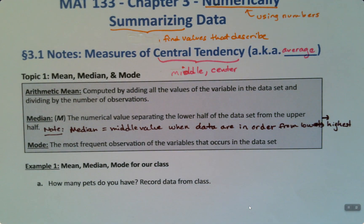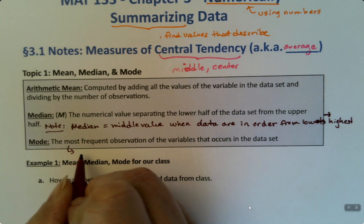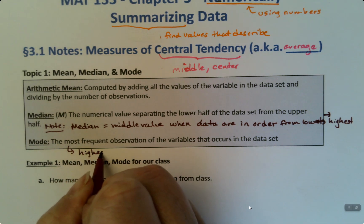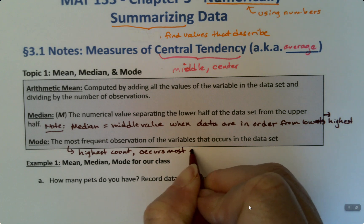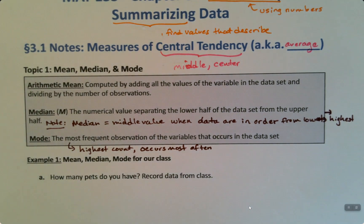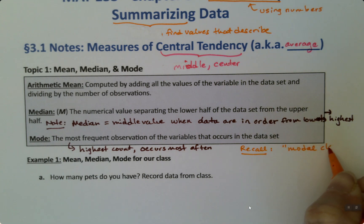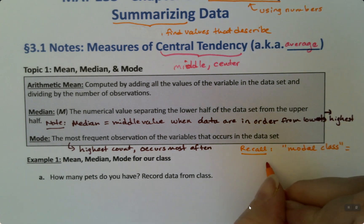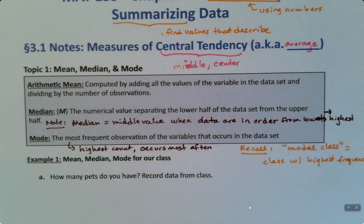And then the mode, the mode is the value that has the highest frequency. In other words, it's the one that occurs the most often. So it'll have the highest count. You've actually already run into this before because we talked about, in chapter 2, the modal class. So modal class is the class that is the mode. Modal class is the class that has the highest frequency, or count, because that's what frequency is. You're counting how many fall into each category or each group.